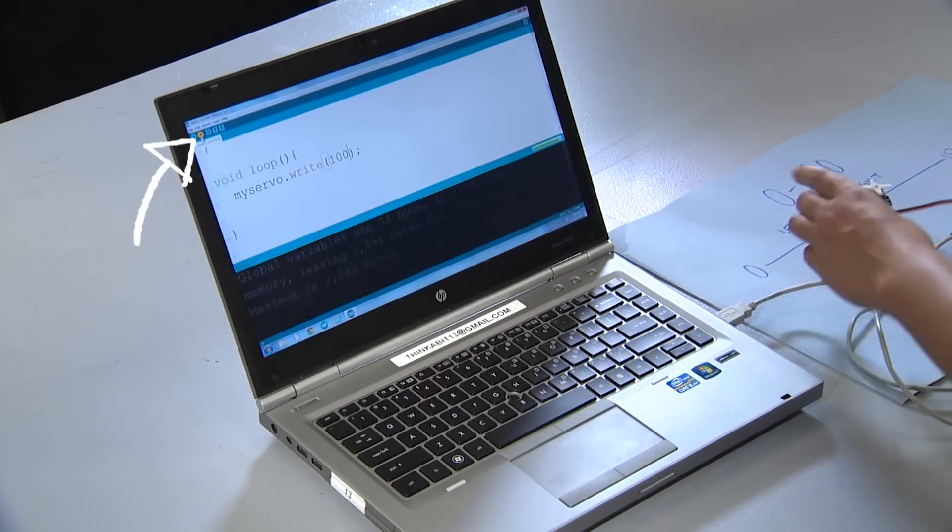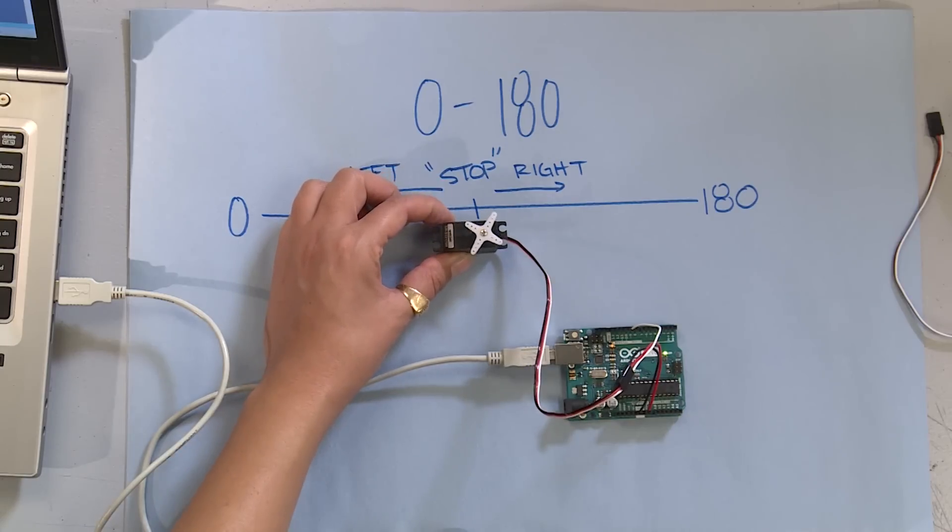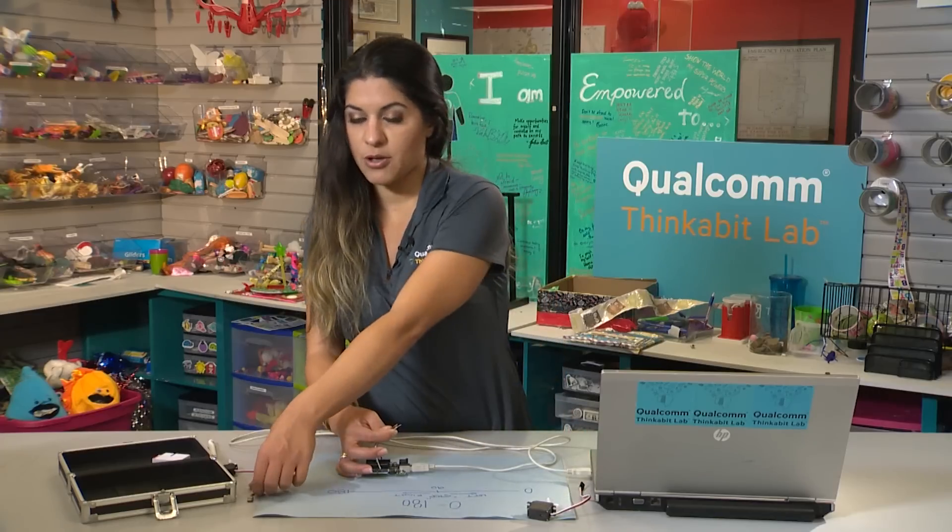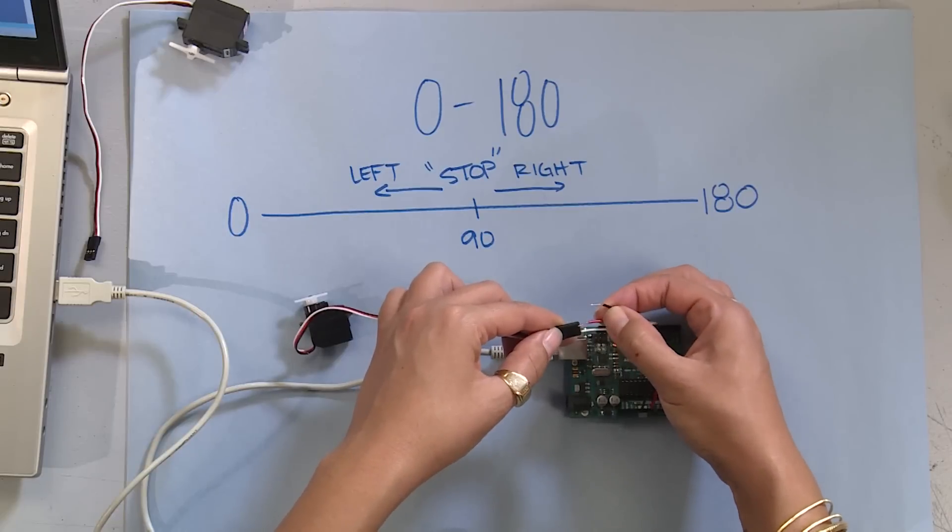I'm going to upload that. Notice now it spins to the right slowly. Keep in mind, if you were to use that line of code and switch it to the small servo, you're essentially telling it to go to position 100 and then not do anything.